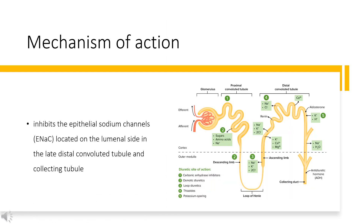Triamterine inhibits the epithelial sodium channels (ENaC) located on the luminal side in the late distal convoluted tubule and collecting tubule, which are transmembrane channels that normally promote sodium uptake and potassium secretion. In the late distal tubule to the collecting duct, sodium ions are actively reabsorbed by ENaC on the luminal membrane and are extruded out of the cell into the peritubular medium by a sodium-potassium exchange pump, the Na-K-ATPase, with water following passively. Triamterine exerts a diuretic effect on the distal renal tubule to inhibit the reabsorption of sodium ions in exchange for potassium and hydrogen ions, and its natriuretic activity is limited by the amount of sodium reaching its site of action.